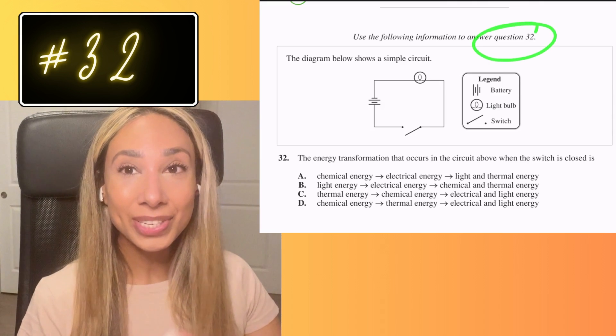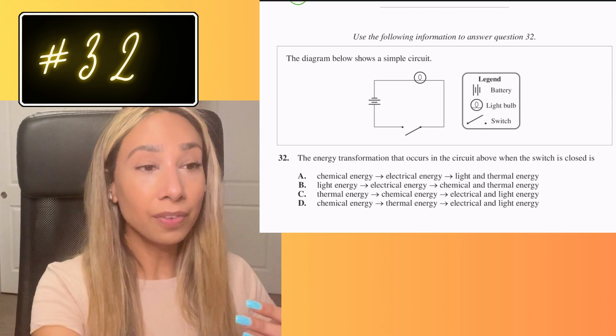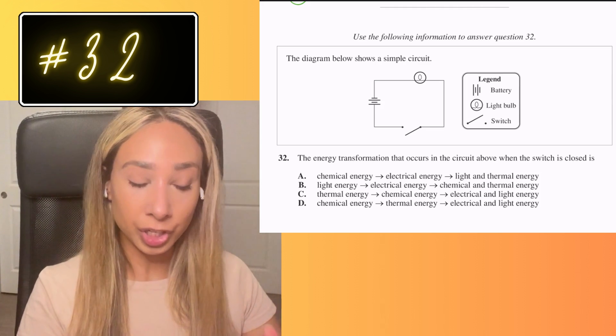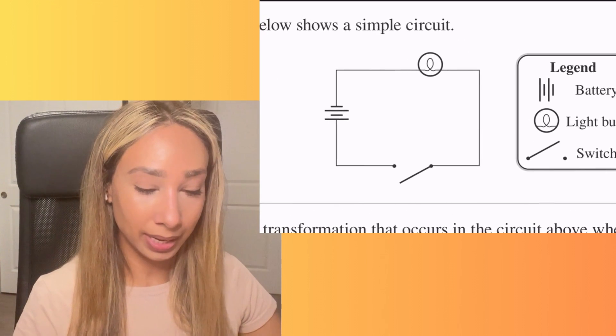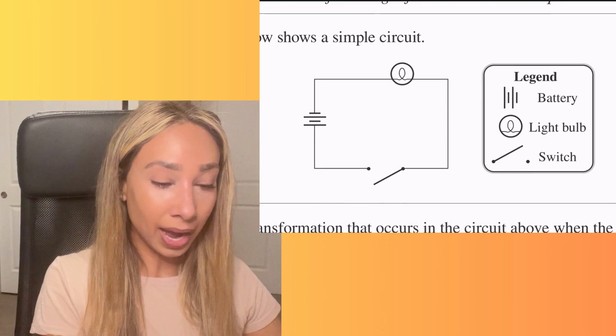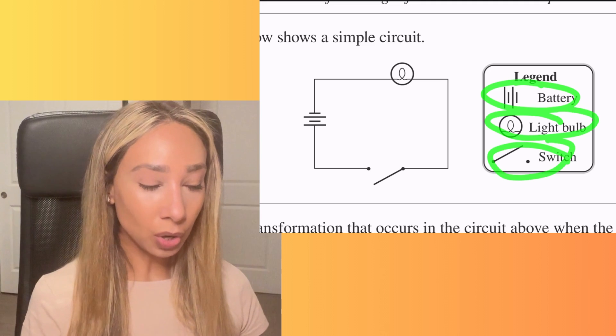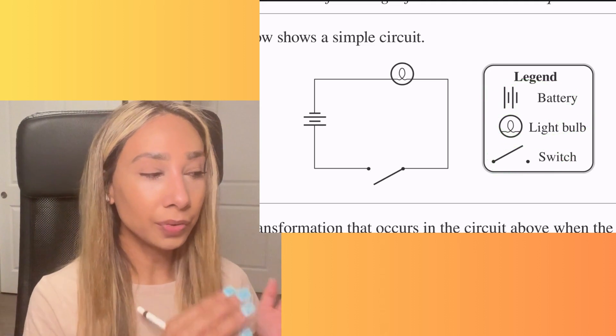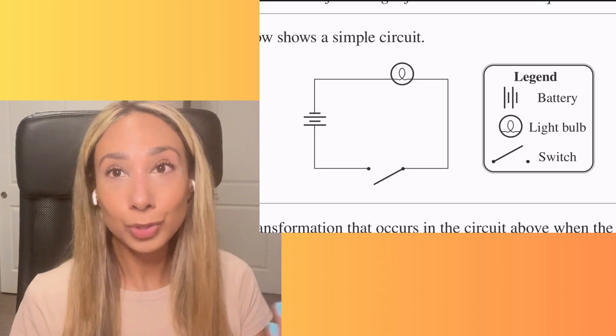Number 32. So with this one, we want to make sure we are clear of our terms that are very specific to energy. I'm going to kind of avoid looking at the options and just look and see what's happening here. So they've given us a legend with our battery, our light bulb and our switch. So if we're thinking about converting energy, we are converting from one form of energy to another in order to get this light bulb to work.